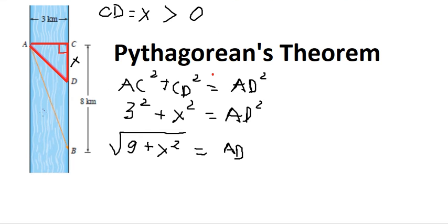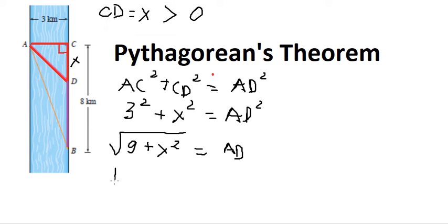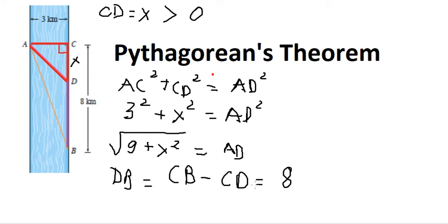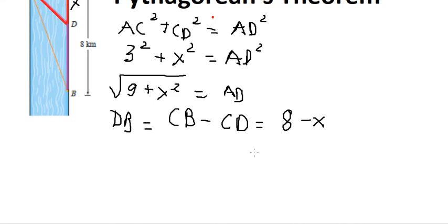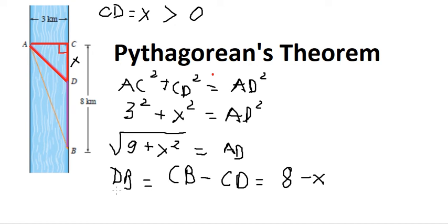Now let's find DB. If we have the value of CD, we can find DB. That should be DB equals CB minus CD. CB equals 8 and CD equals S, so DB equals 8 minus S. Now we have AD and DB.